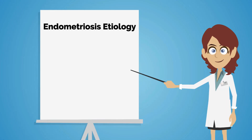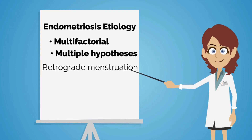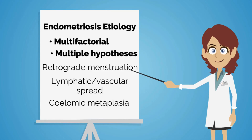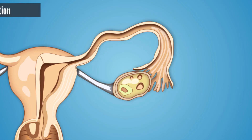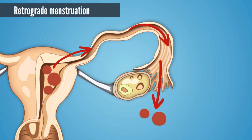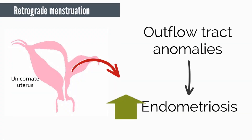The etiology of endometriosis is thought to be multifactorial, and there are multiple hypotheses about its pathophysiology, including the retrograde menstruation theory, aberrant lymphatic or vascular spread of endometrial tissue, and the celomic metaplasia theory. In retrograde menstruation, endometrial debris travels backwards through the fallopian tube during menses into the peritoneal cavity, where tissue implants on various structures. Women with outflow tract anomalies have been shown to have a high incidence of endometriosis, which supports this theory.